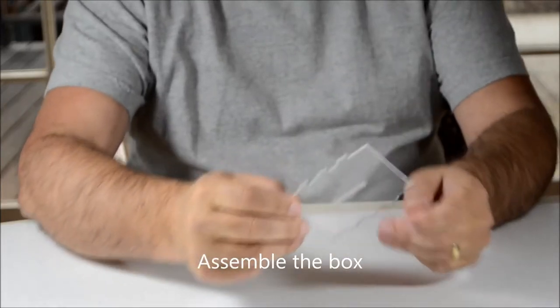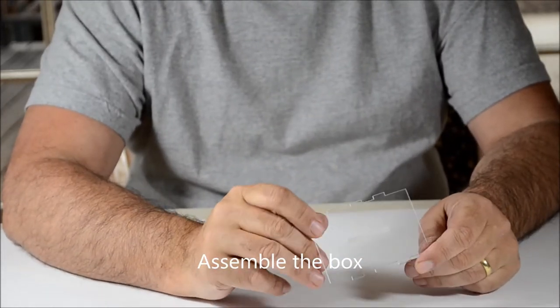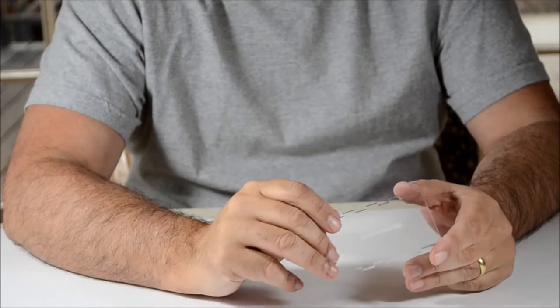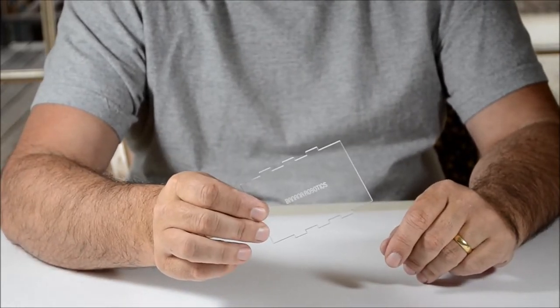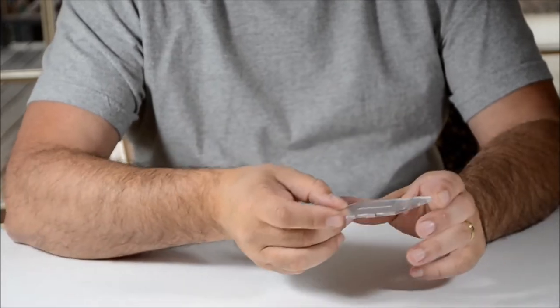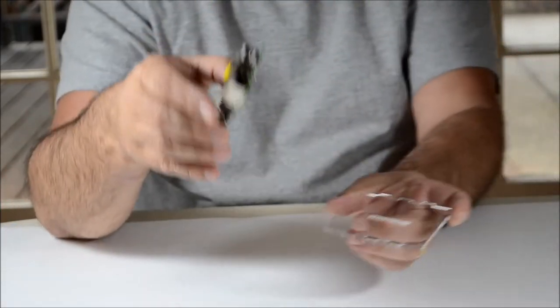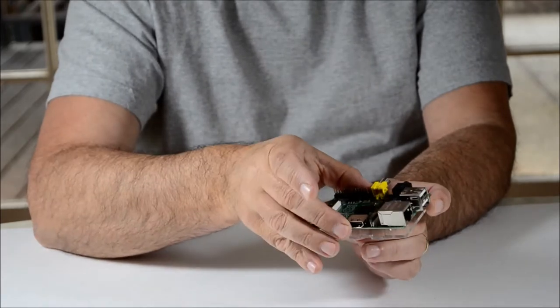So we're going to put together this Banana Robotics box for the Raspberry Pi. Here I have this bottom piece that says Banana Robotics on it, and I'm going to start with that. I'm going to put the Raspberry Pi on top of this bottom piece.